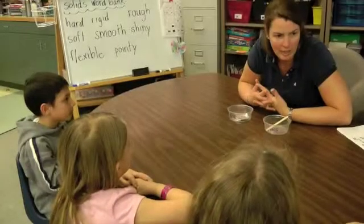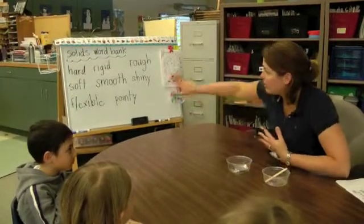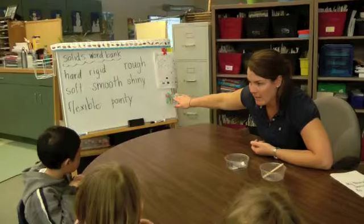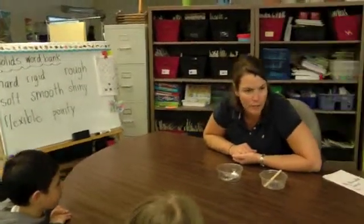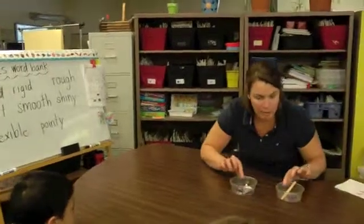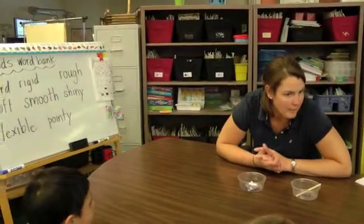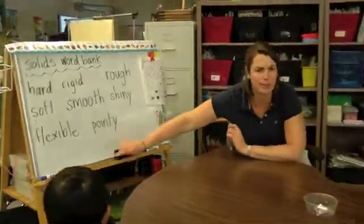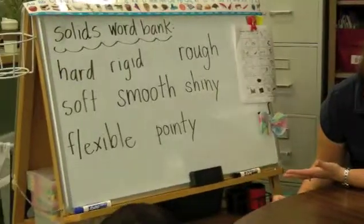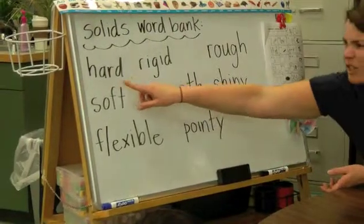We've been observing and talking about the properties of solids and liquids, and we've developed some word banks. One of our word banks is our solid word bank, and we talked about different words and what they meant. Let's look at our word bank and read our words, and then that's going to tell me if you know a solid that has that property.